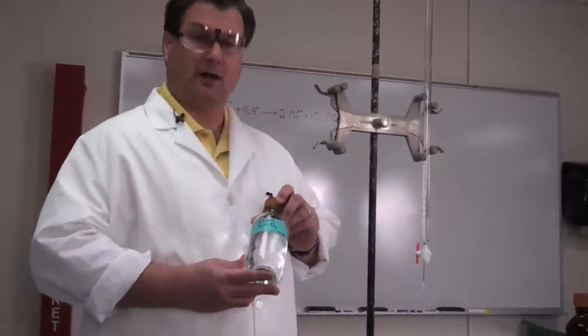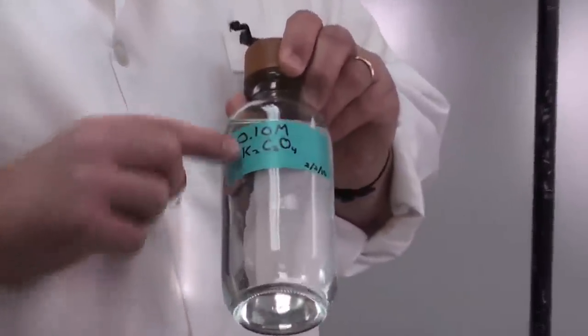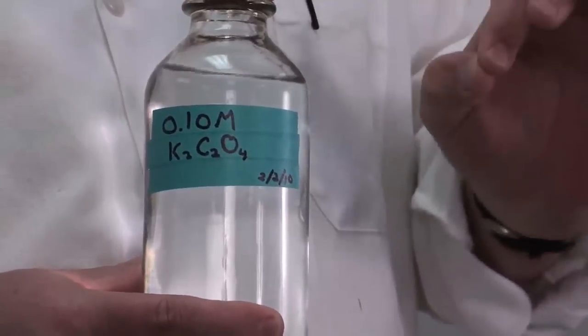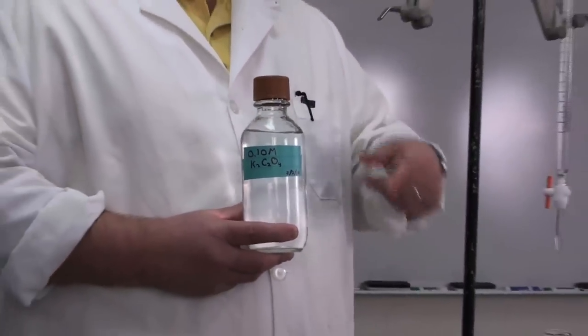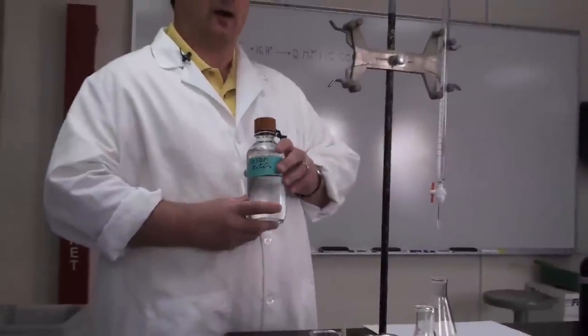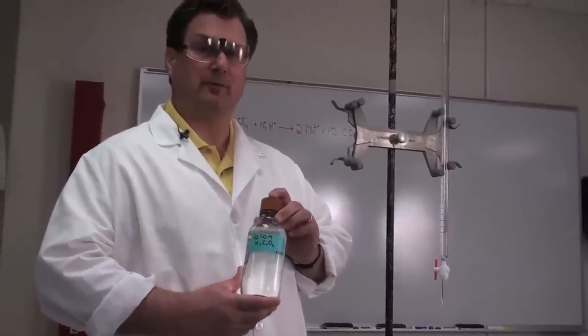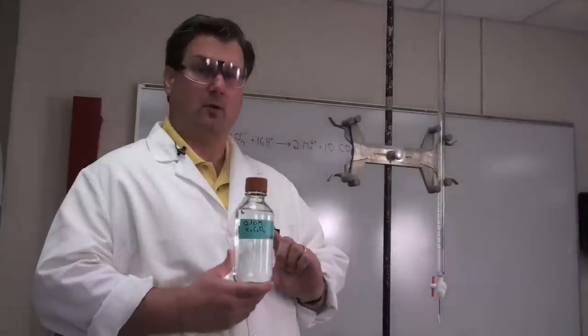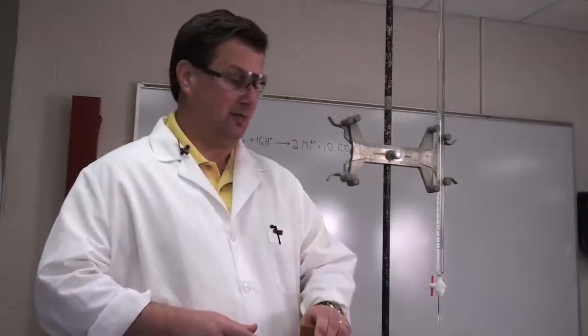Our standard solution, potassium oxalate, I've made to a known concentration of 0.10 molar gravimetrically. I've weighed out very precisely a known amount of material and dissolved it to a certain volume in water. Now we want to measure out a volume very precisely so we can determine the total number of moles used.